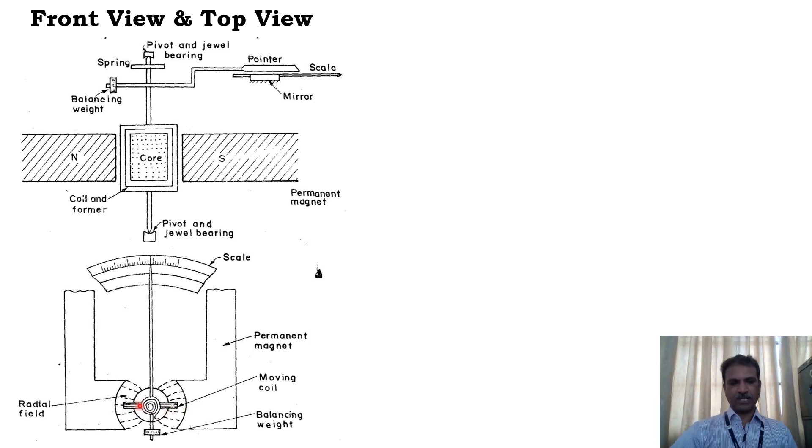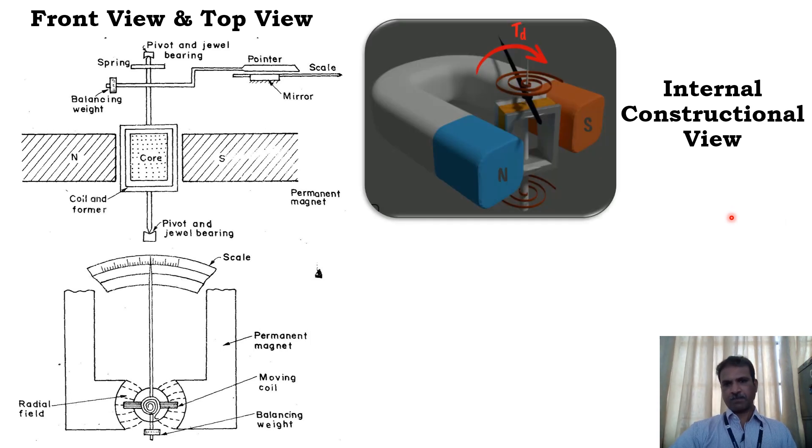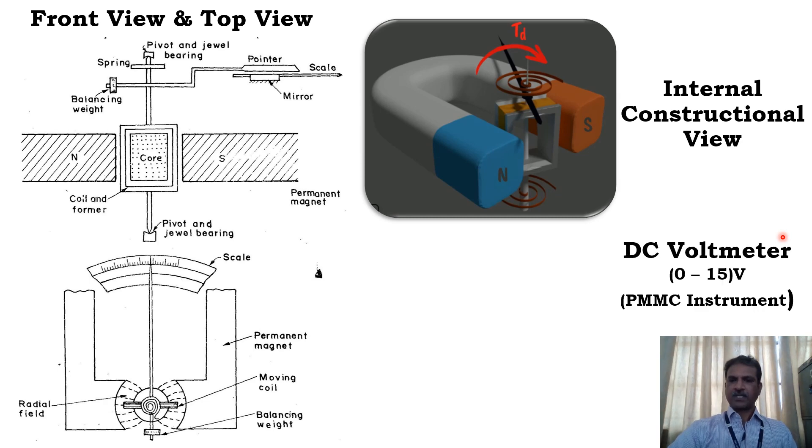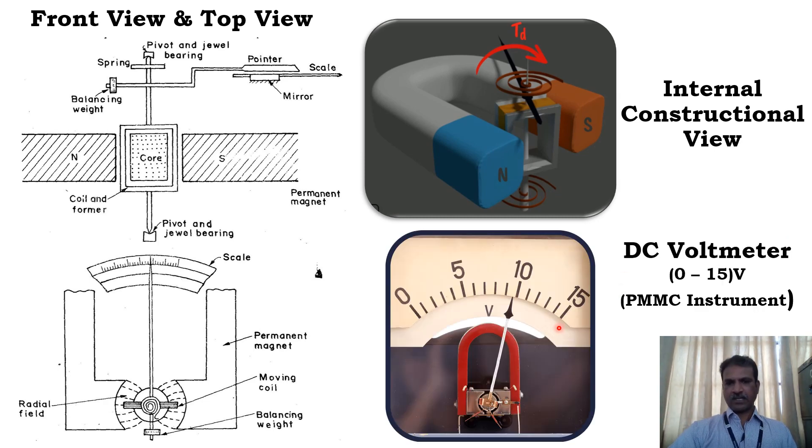We can see the scale, the pointer, the former, the coil which is wound on this cylindrical aluminum former. We have a spring, we can see the permanent magnets and how the flux lines are radial in nature. Let's see an internal construction view of this PMMC instrument. Here you can see a U-shaped permanent magnet, we have the coil, the spring, the spindle, and the pointer, and the torque exerted on this coil, that is TD, deflecting torque.